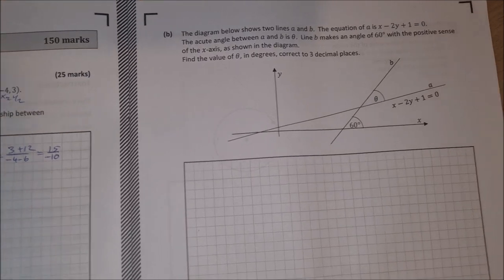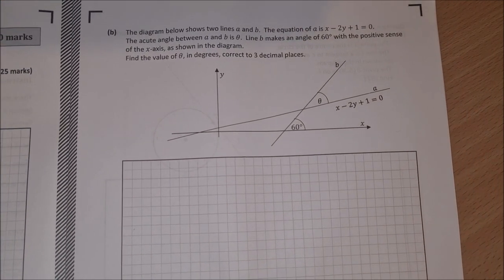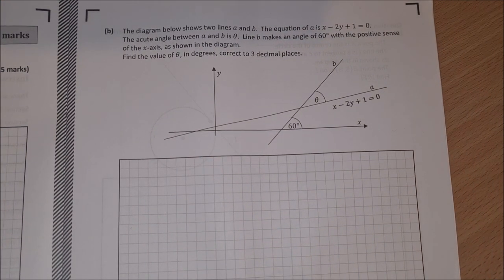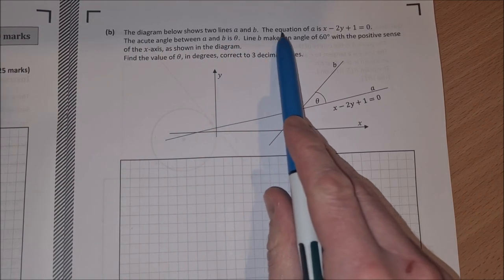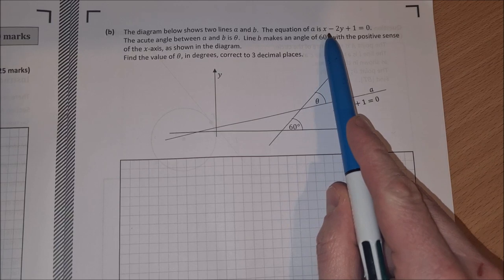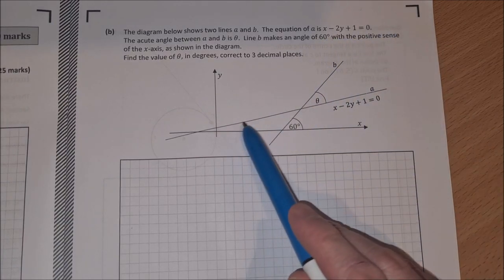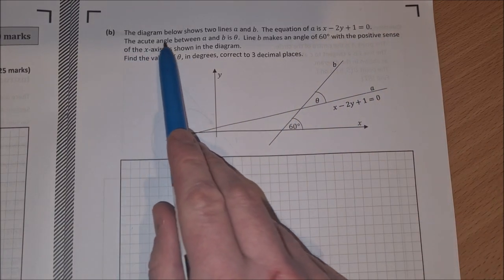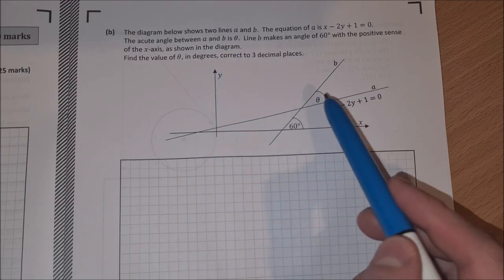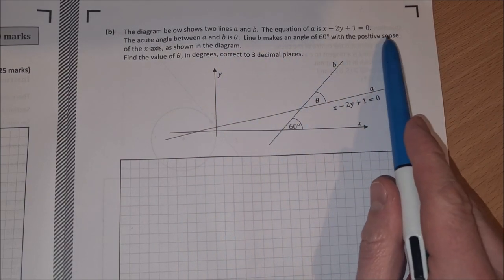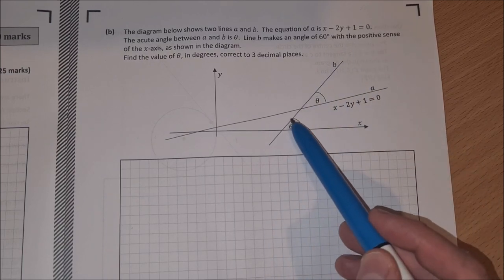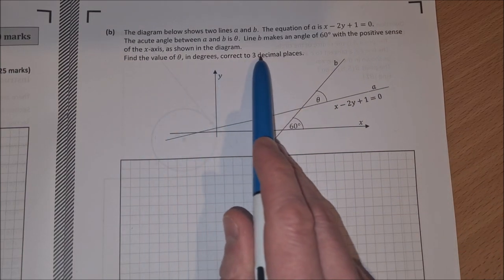On to part B then. Part B looks a bit tricky but it's actually a quite straightforward question. The diagram below shows two lines, A and B. The equation of A is x minus 2y plus 1, the acute angle between A and B is theta, the line B makes an angle of 60 degrees with the positive sense of the x-axis. Find the value of theta in degrees correct to three decimal places.